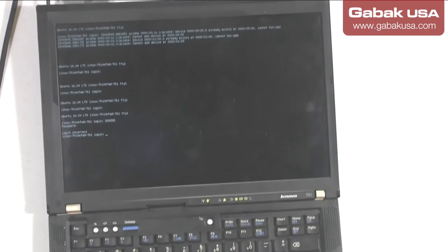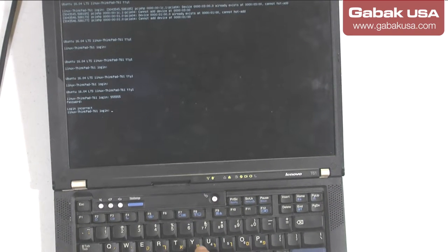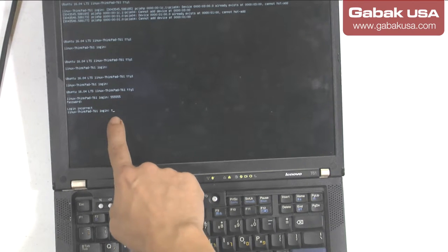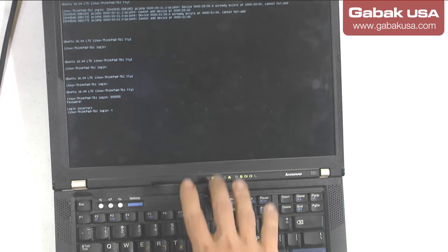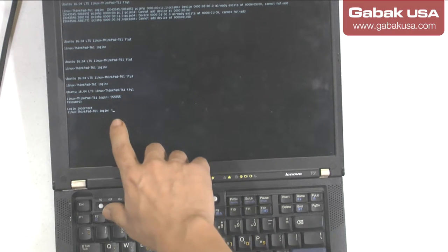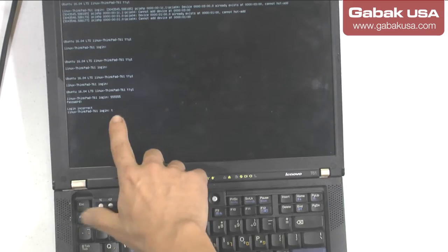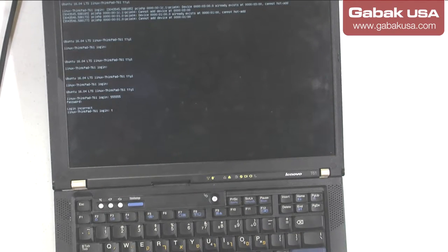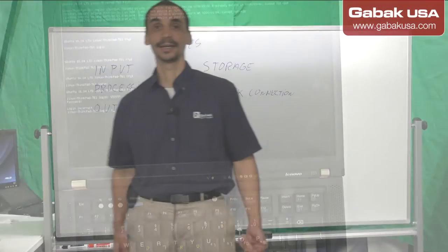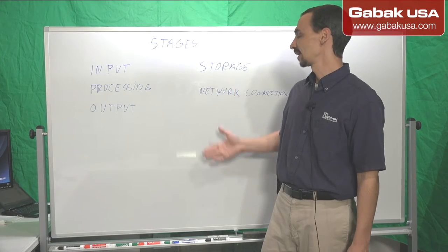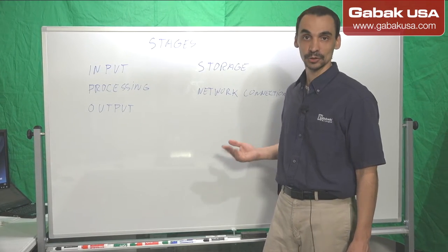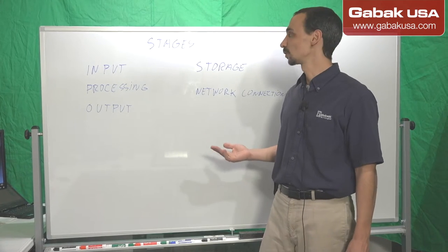So each time I press, let's say, T and you have a T on the screen. So this will be the input. The computer will process it and then it will show me the T or whatever I want to do with the computer. So that is pretty basic but it's good to understand this basic concept so you can understand better how computer works.